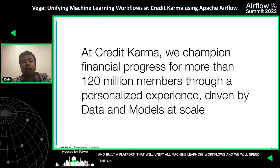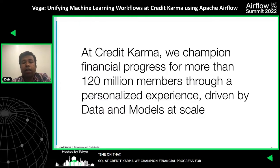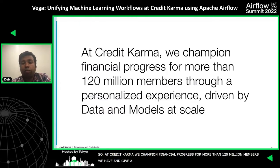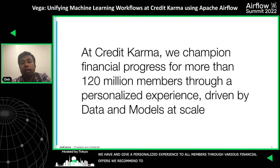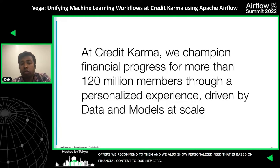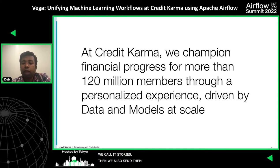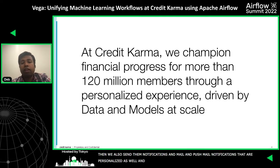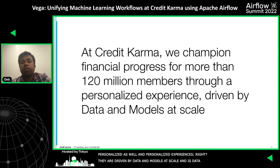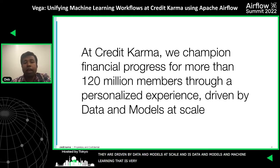At Credit Karma, we champion the financial progress for more than 120 million members. We give a very personalized experience to all our members through various financial offers that we recommend to them. We also show a personalized feed based on financial content to our members, which we call stories. We also send them notifications, mail, and push notifications, and those are personalized as well. All these personalized experiences are driven by data and models at scale. Data, models, and machine learning are very important to personalizing the experience for our members.